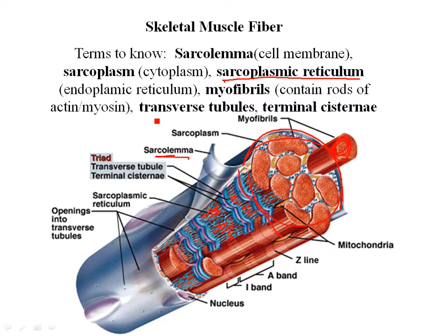There are also tubes cutting transversely through the cell called transverse tubules. They cut across the cell and bring information from the outside of the cell down into the cell, because we want every part of that cell to get the impulse all at once. The transverse tubules bring that information in from the outside, and then the sarcoplasmic reticulum carries that information throughout the cell.